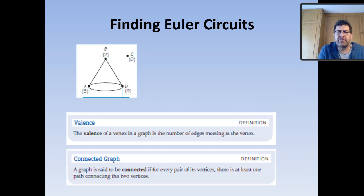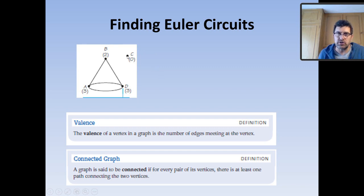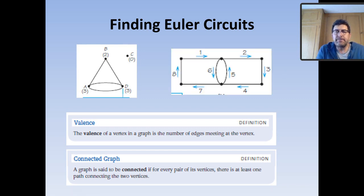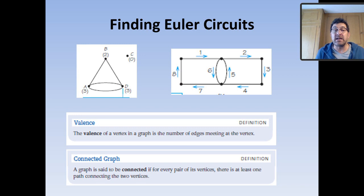Let's look at this graph. Is it connected? The answer is no. Vertex C up here is not connected to the rest of the graph — vertex C has a valence of 0 because there are no edges going into or leaving it. At vertex B the valence is 2, at vertex A the valence is 3, and the same at vertex D. Here we have another graph where every single vertex is connected by an edge, hence there is an Euler circuit.